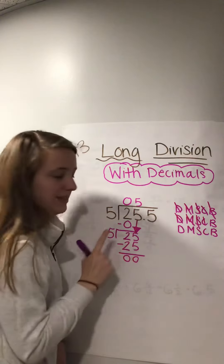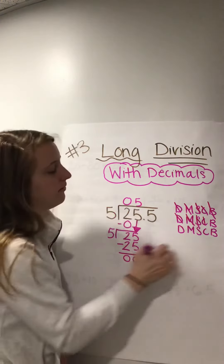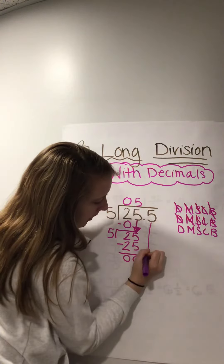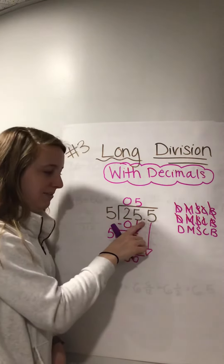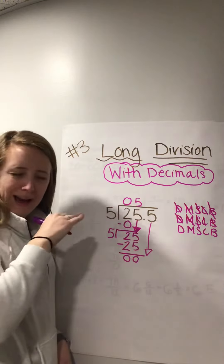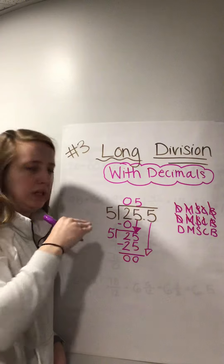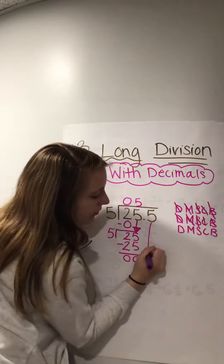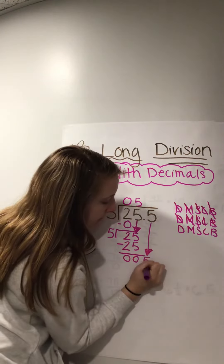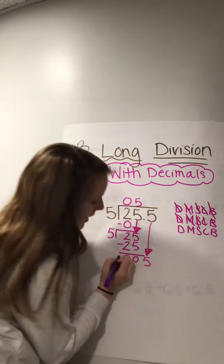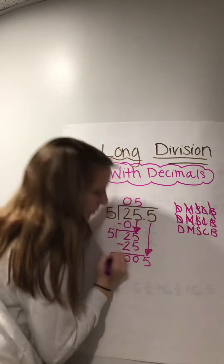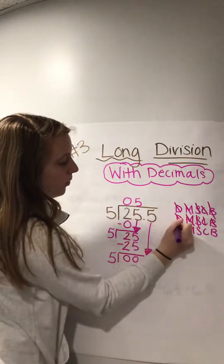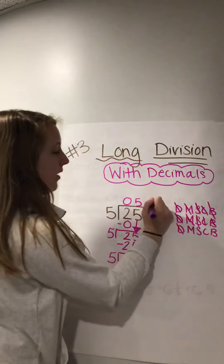Check — zero is indeed less than five. And we're going to bring down our next number. Leave that decimal point alone — we're going to act like right now it's not even there. Then you're going to bring down the five. And we're going to say back to the top again.